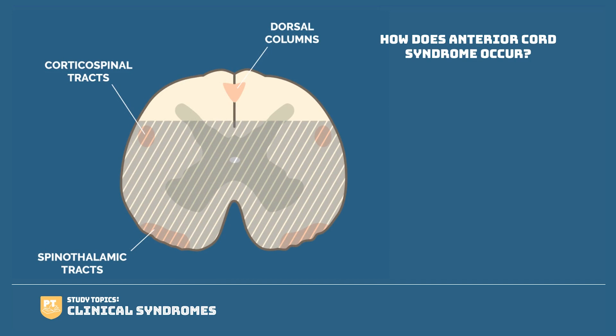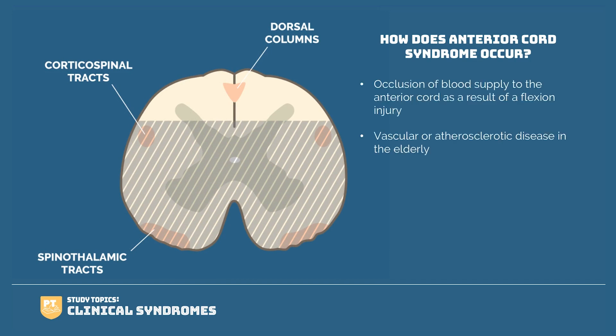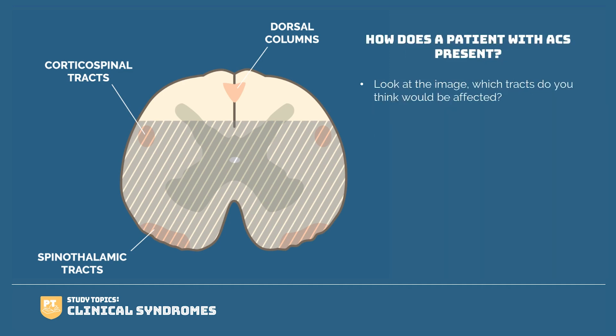How does anterior cord syndrome occur? It is a relatively rare injury. It most often occurs from occlusion of blood supply to the anterior cord as a result of a flexion injury. It may also occur as a result of vascular or atherosclerotic disease in the elderly. Looking at the image, which tracts do you think would be affected? Both the corticospinal and spinothalamic tracts are affected.